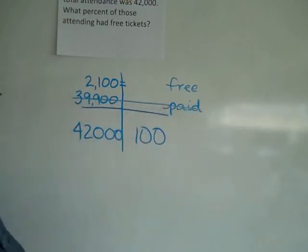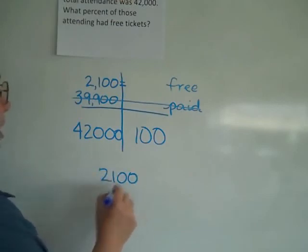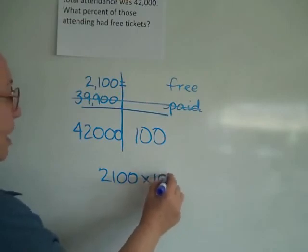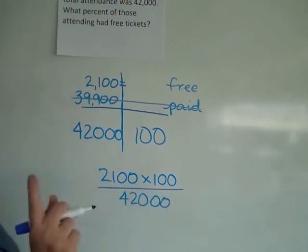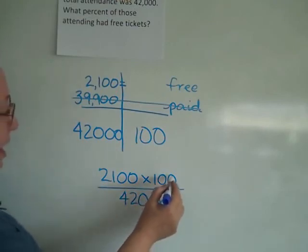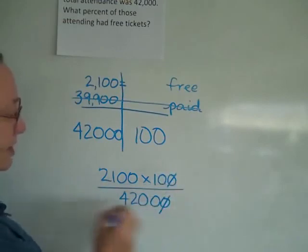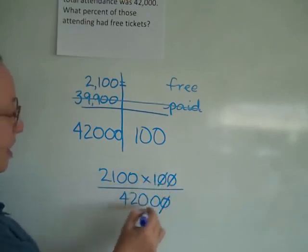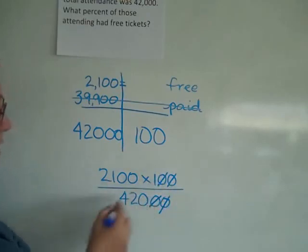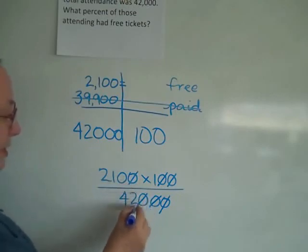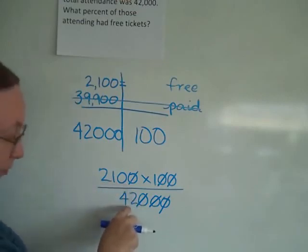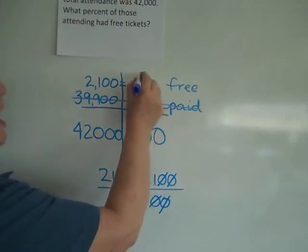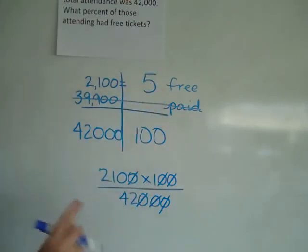I'm not going to use the paid portion for this problem. This is better done on a calculator: 2,100 times 100 divided by 42,000. This has quite a few zeros, so cancel one zero on top with one on the bottom three times, leaving 210 divided by 42. Take 210 divided by 42 on your calculator and you will come up with 5, which means 5% of the people attending were free.